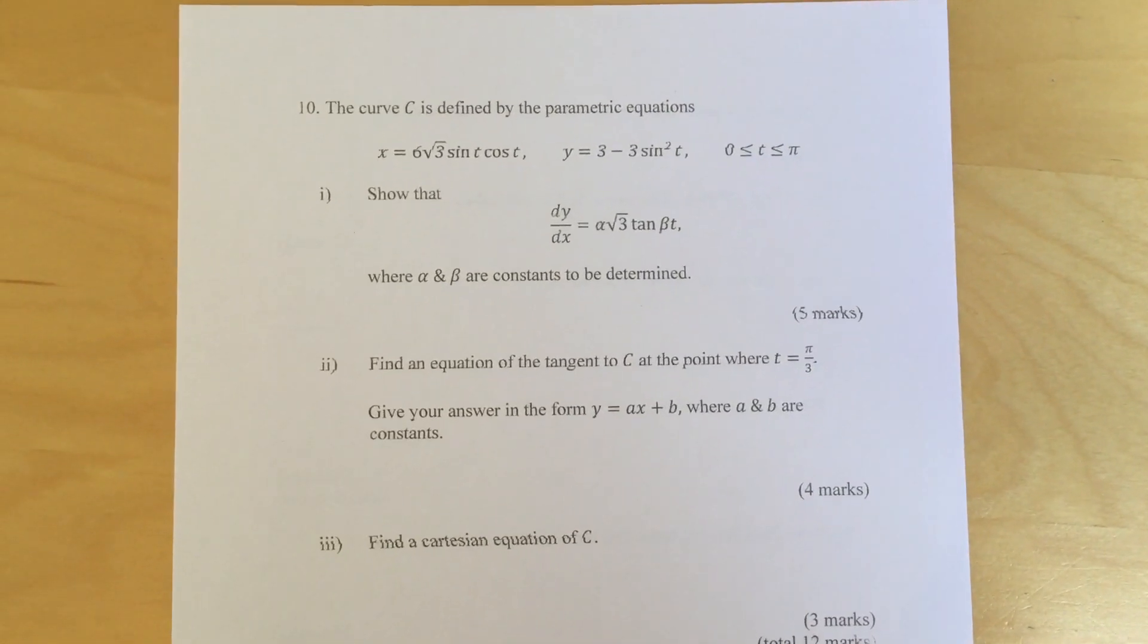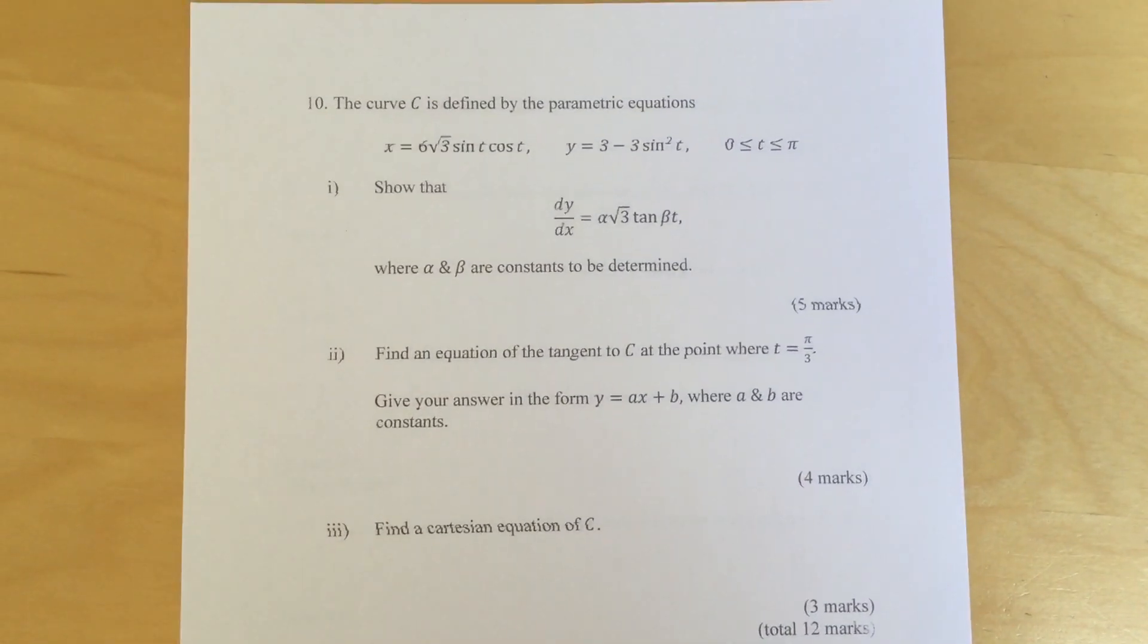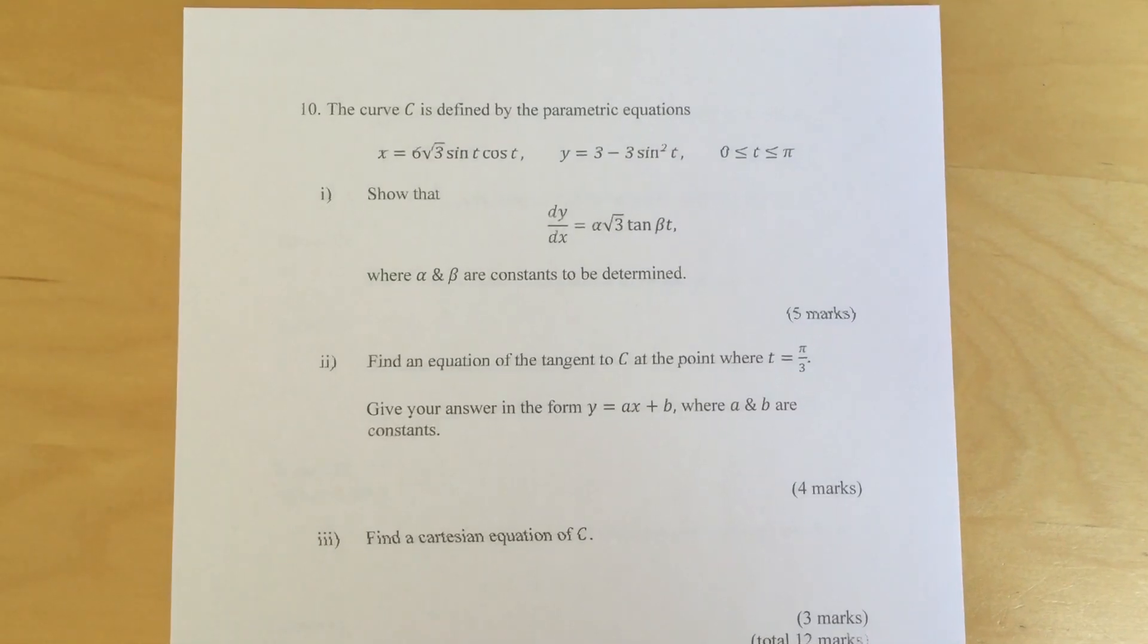Part 1: Show that dy dx equals alpha times root 3 tan beta t where alpha and beta are constants to be determined.